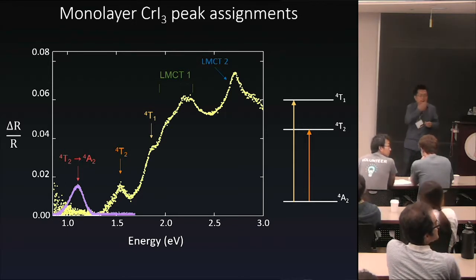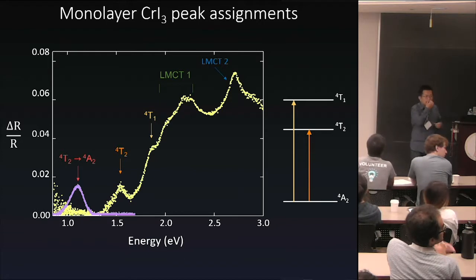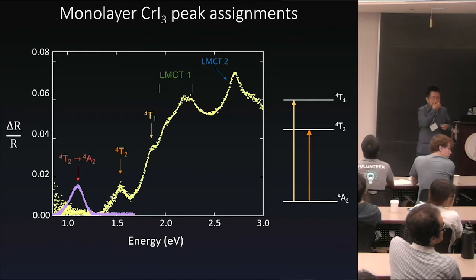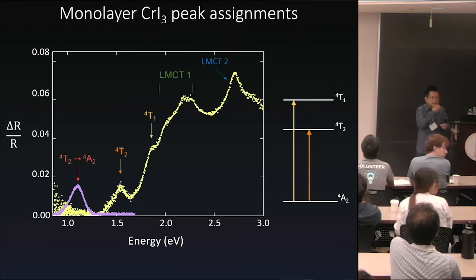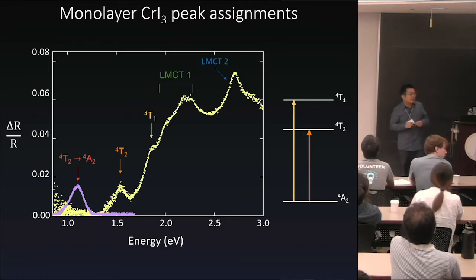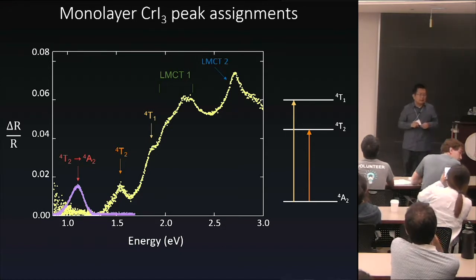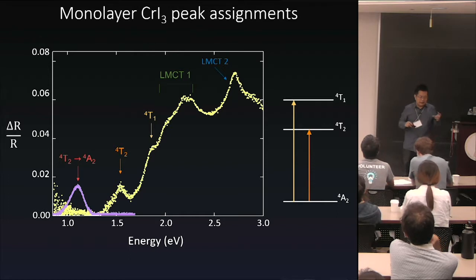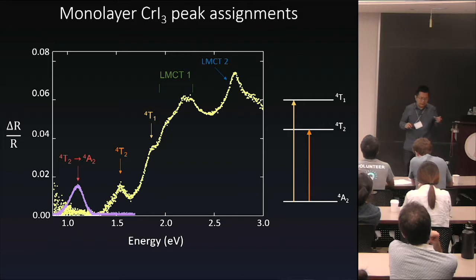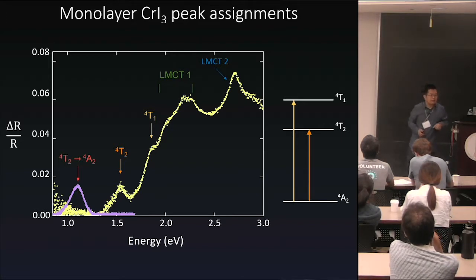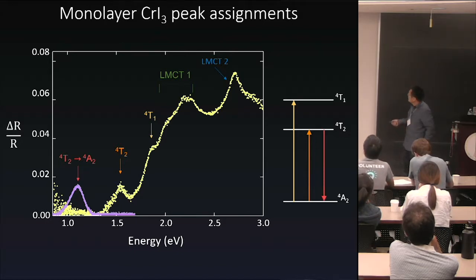Question from audience: Did you try adding an electric field to explicitly break inversion symmetry to see if the signal gets amplified? Answer: Yes, we tried that. We didn't see strong effects — the electric field is just too weak compared to the internal field.